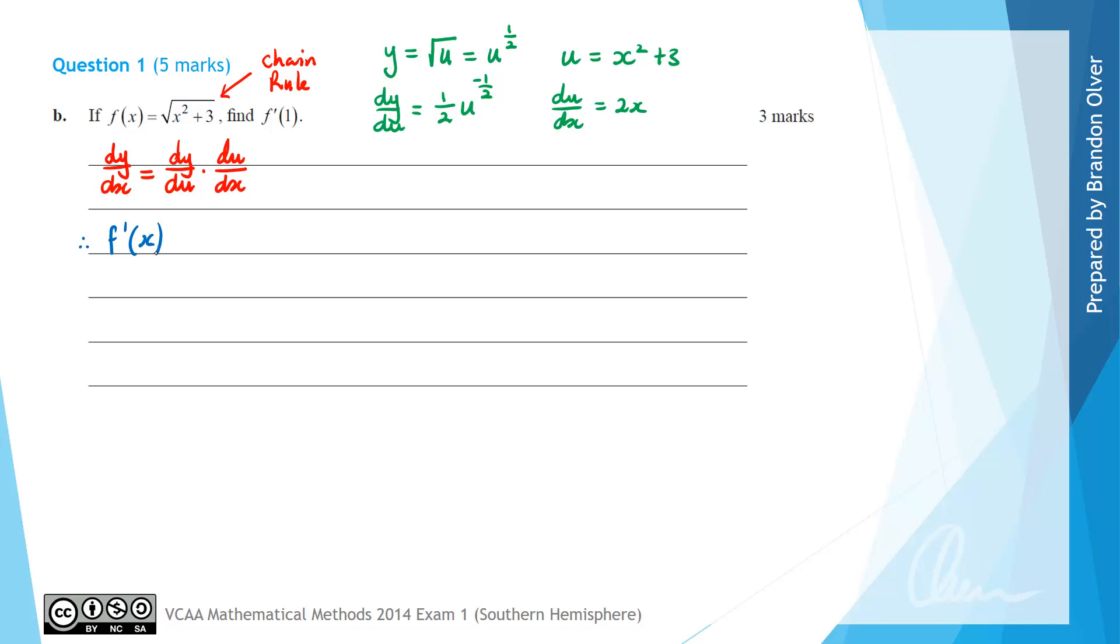f dashed of x is going to equal a half times u, but u has the rule x squared plus 3 to the power of negative a half, times du/dx, which is 2x.